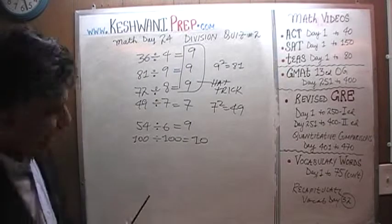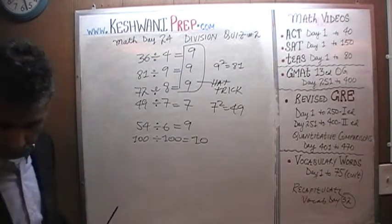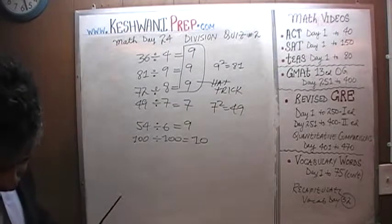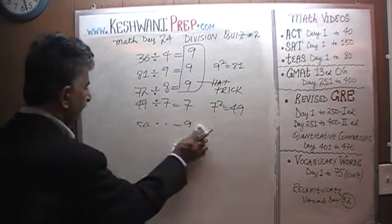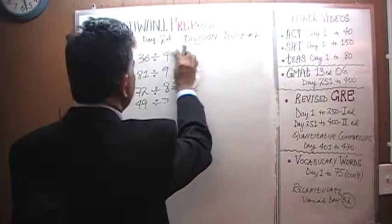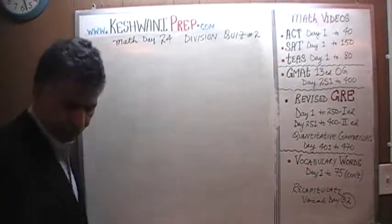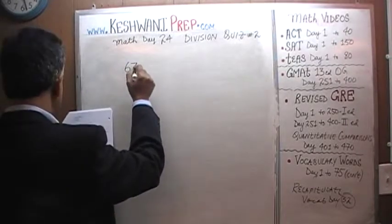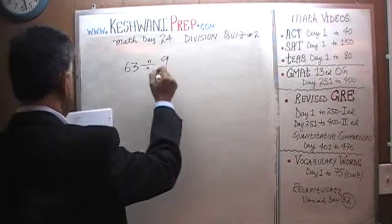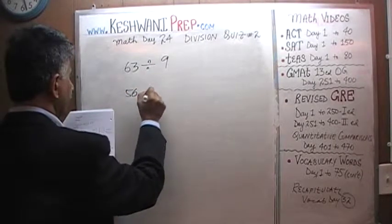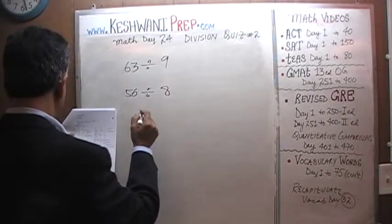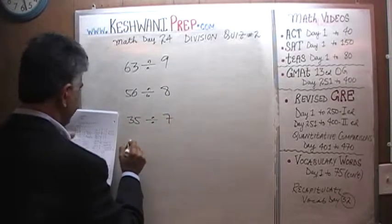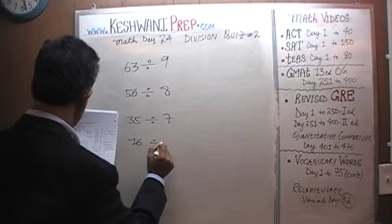Let's keep on going. 63 divided by 9. 56 divided by 8. 35 divided by 7. And 16 divided by 4.